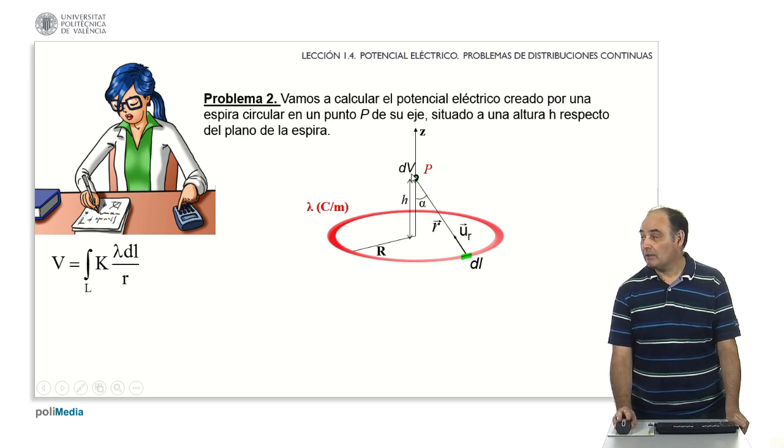In this moment, you can realize that this is the hypotenuse of a rectangle formed by this horizontal leg, which is the radius of the circumference, and this other vertical leg, which is h.